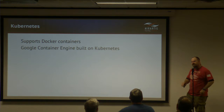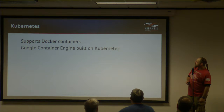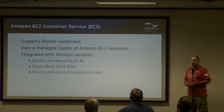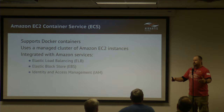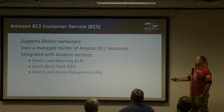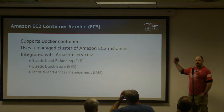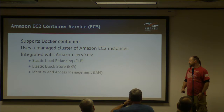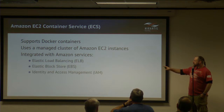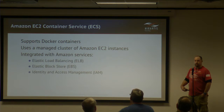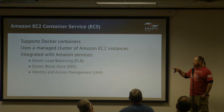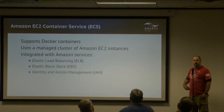Kubernetes — Google's contribution to the world — we'll dive into in the next section. Moving to cloud platforms: Amazon's container service takes EC2 instances and uses them as a cluster for containers. If you're already using EC2, it's the same servers repurposed for containers. Key integrations include IAM for identity management, Elastic Block Storage for persistent volumes, and Elastic Load Balancers for traffic routing.